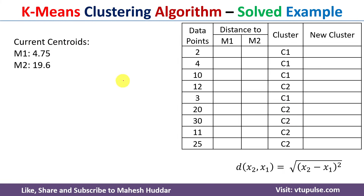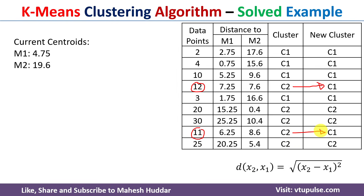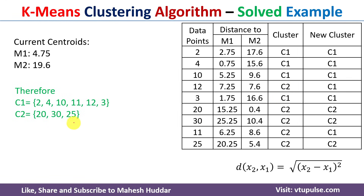With centroids m1 = 4.75 and m2 = 19.6, we recalculate distances from all data points to the new centroids and reassign each point to a cluster. In this iteration, data point 12 moves from c2 to c1, and data point 11 also moves from c2 to c1. Since two data points have moved, we calculate new centroids again: for m1 we get 7, and for m2 we get 25.